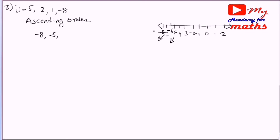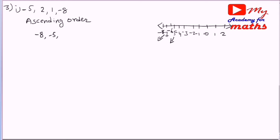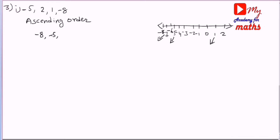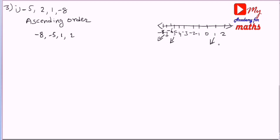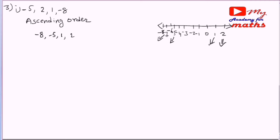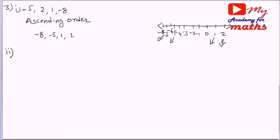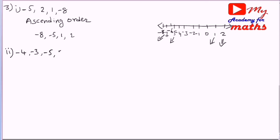Continuing the ascending order: after minus 8 and minus 5, we add the remaining numbers. Now second bit: minus 4, minus 3, minus 5 — arrange in ascending order.